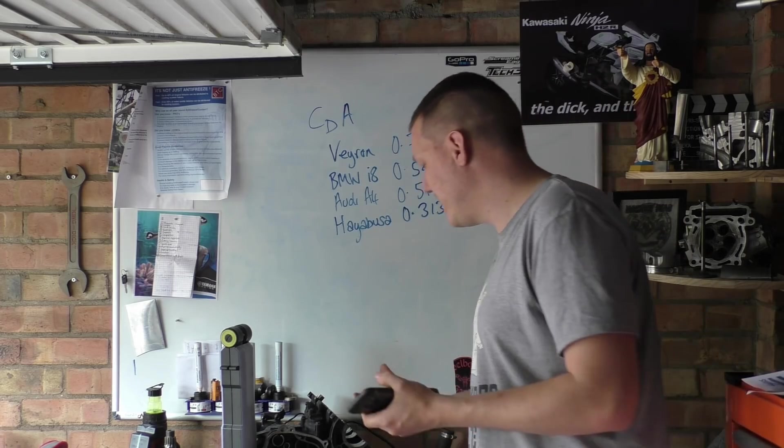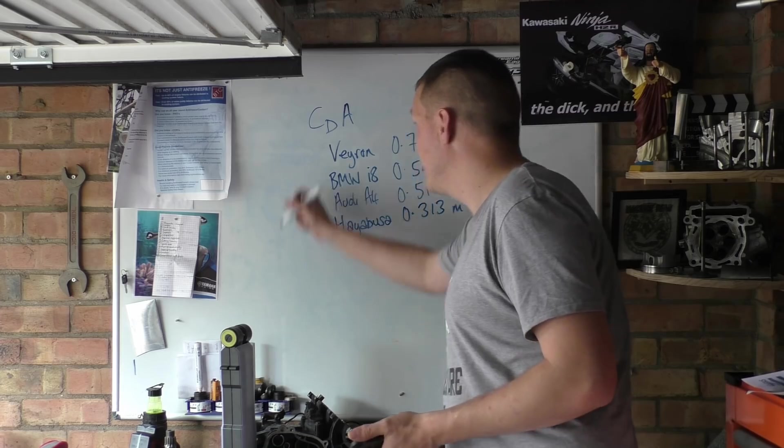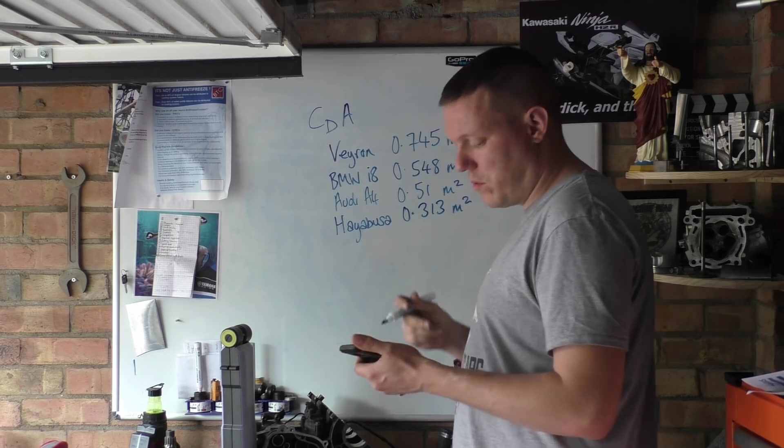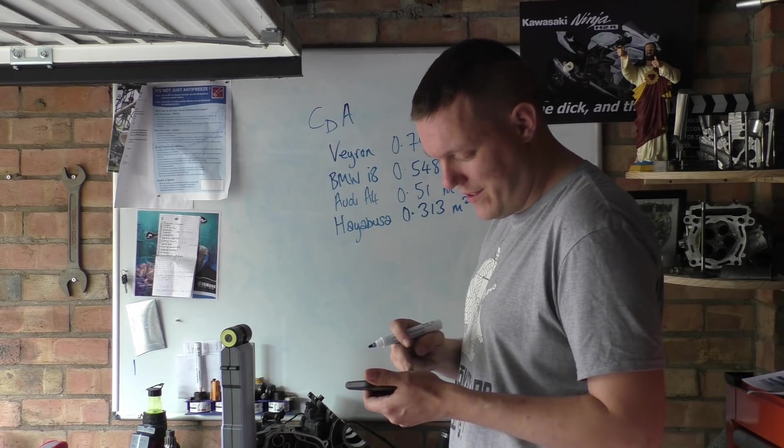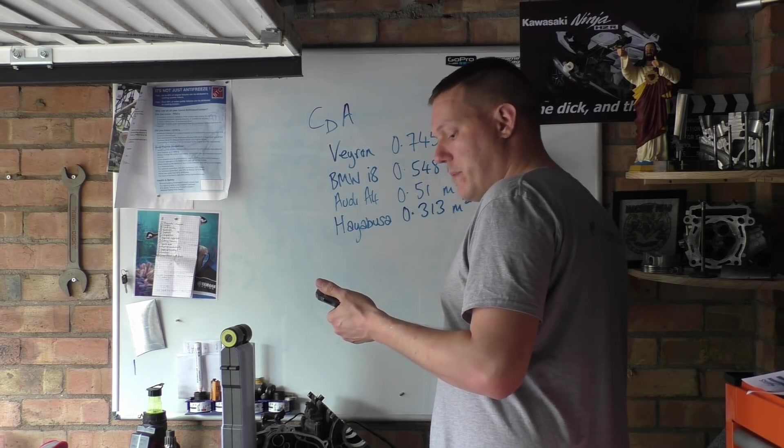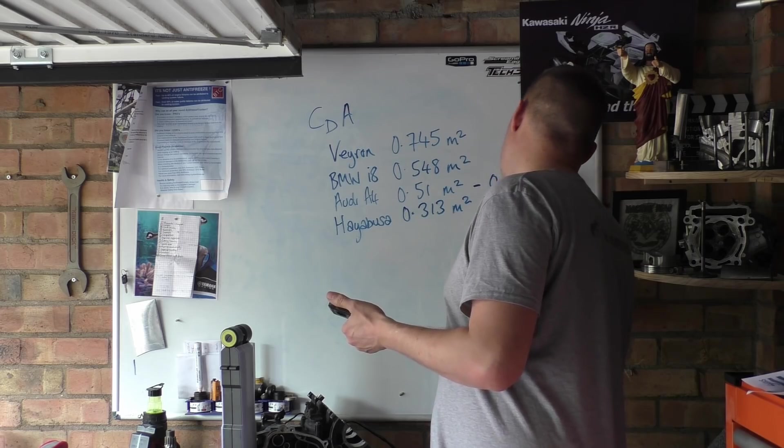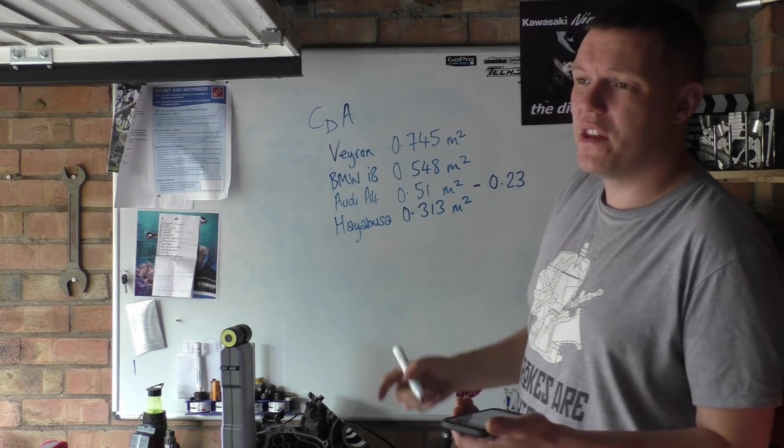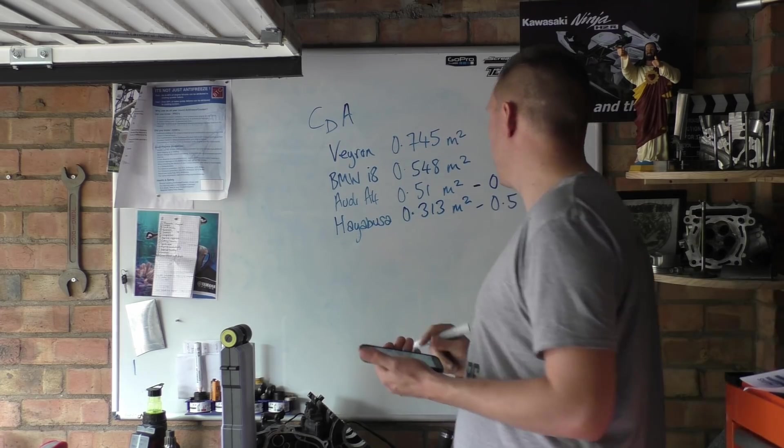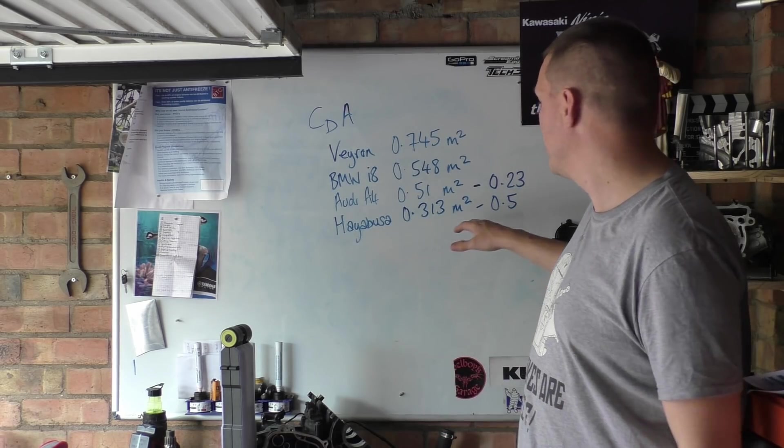If you get the CD drag coefficient numbers—the only one I could find reliably for all these was the Audi A4, and it had a CD of 0.23. Then if you get your Hayabusa, it's going to be probably something like 0.5, you know what I mean. I couldn't find the exact data because these things are hard to come by.